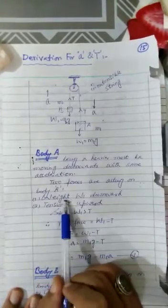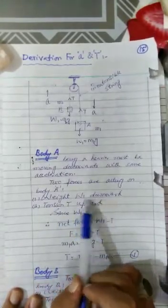So now when it moves downward, just imagine that motion. So there are two forces acting on body A. Number one, weight W1 acting downward and tension T which is acting vertically upward.